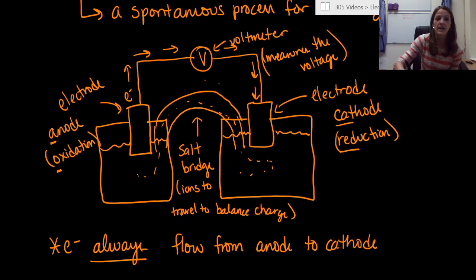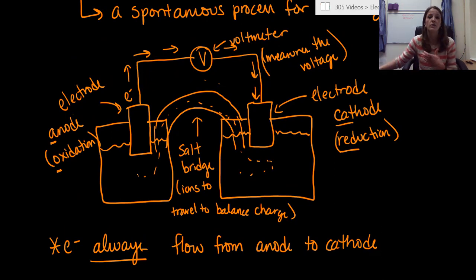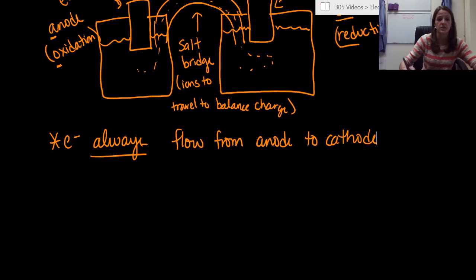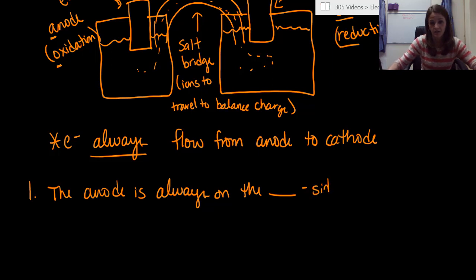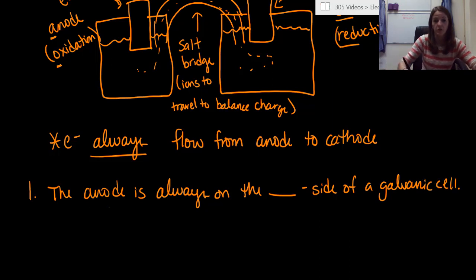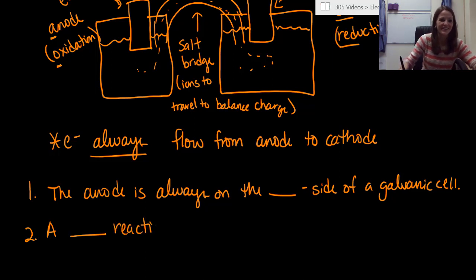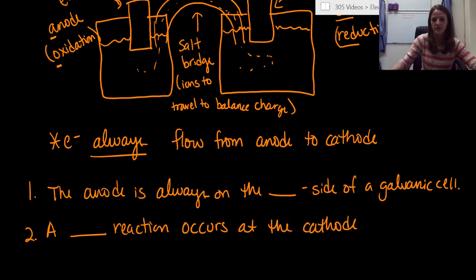The whole schematic I just drew is an example of a galvanic cell or electrochemical cell. By calling it a galvanic cell, we're indicating it's a spontaneous process. Now I want to do two questions: first, the anode is always on the blank side of a galvanic cell; second, a blank reaction occurs at the cathode.